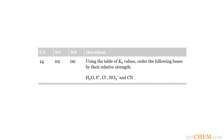The question is: using the table of Ka values, order the following bases by their relative strengths. The five bases are H2O, F-, Cl-, NO2-, and CN-. While this seems like a really short problem, there are a couple of important concepts behind it which I want to go over first. Let's make a list of the compounds in the question.